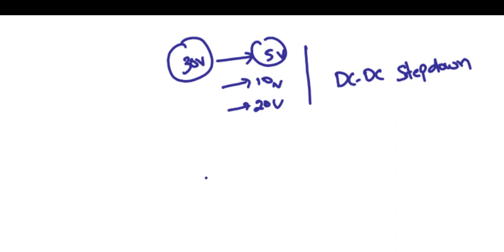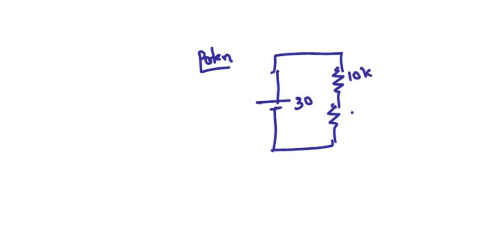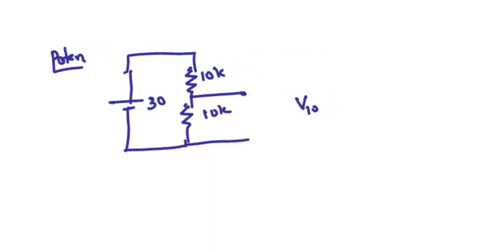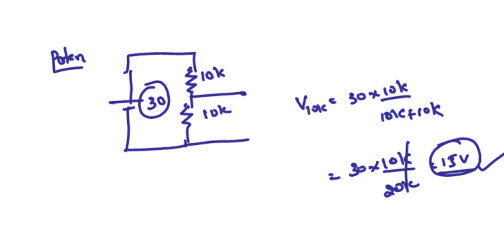When you want to convert DC voltage from one level to another, a simple potential divider circuit may work. For example, with a DC supply of 30 volts and two 10K resistors in series, the voltage across one resistor equals 30 × 10K divided by (10K + 10K), which gives 15 volts. So with a simple potential divider, you can reduce the voltage from one level to another.